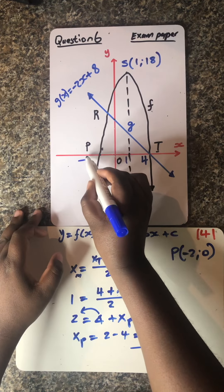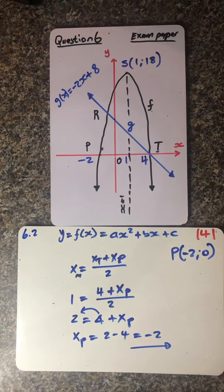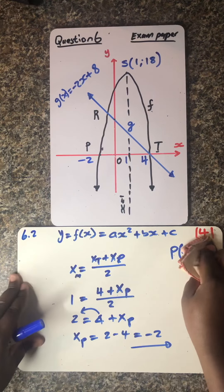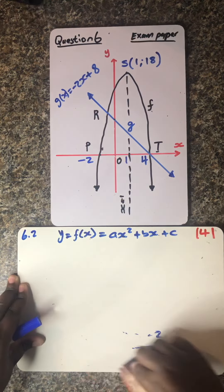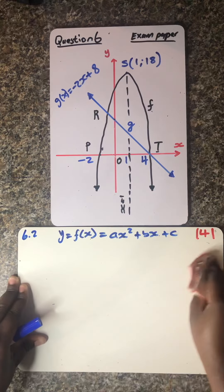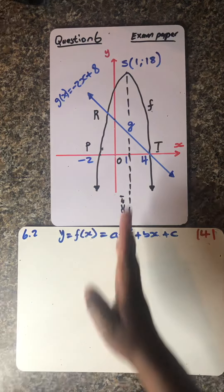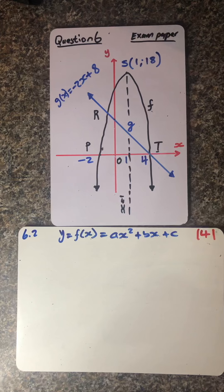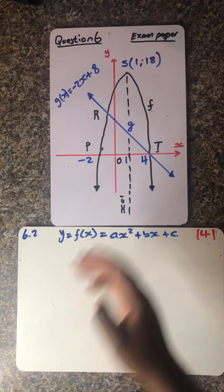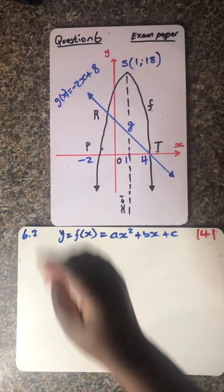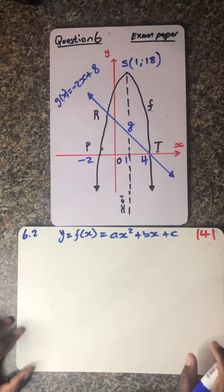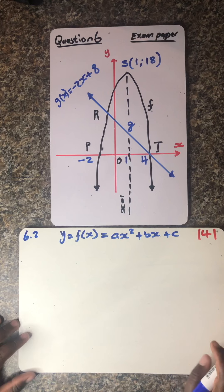So we obviously know over there the x value is negative 2. How did I calculate this? It's because I know the axis of symmetry and I know one point of the x-intercept. So that means 1 is halfway between these two points. Very much important ladies and gentlemen. So guys, let's now try to check if we cannot use this formula.